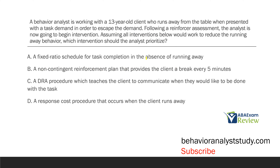A behavior analyst is working with a 13-year-old client who runs away from the table when presented with a task demand in order to escape the demand. Following a reinforcer assessment, the analyst is now going to begin intervention. Assuming all interventions below would work to reduce the running away behavior, which intervention should the analyst prioritize? We are looking for the intervention to prioritize — and since the question tells us all interventions below would work, we need to determine which one is best.